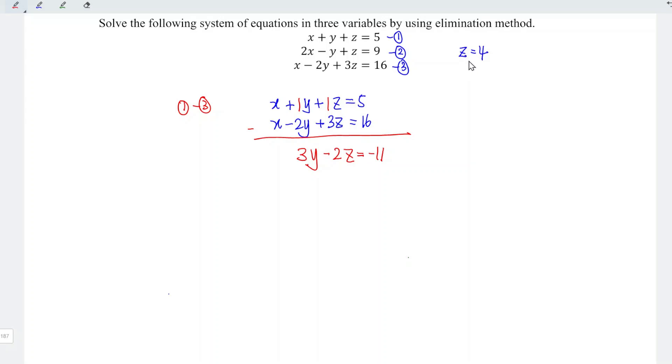Since we have found the value of z, we can now replace z by using the value 4. So which means that we should have 3y minus 2 times 4 is equal to negative 11. Let's move the constant to the right. Minus moved over becomes plus. So which means that we should have minus 11 plus 8 is equal to 3y.